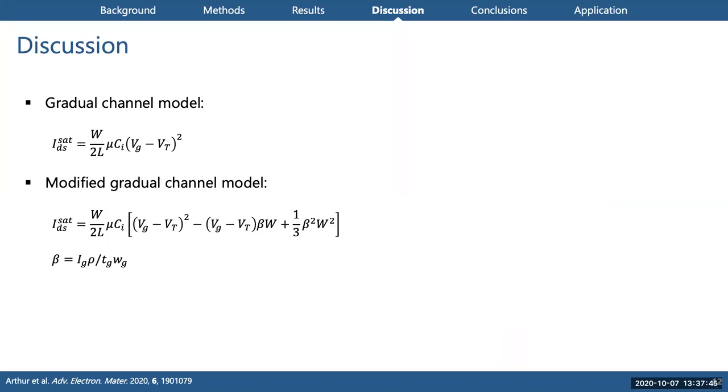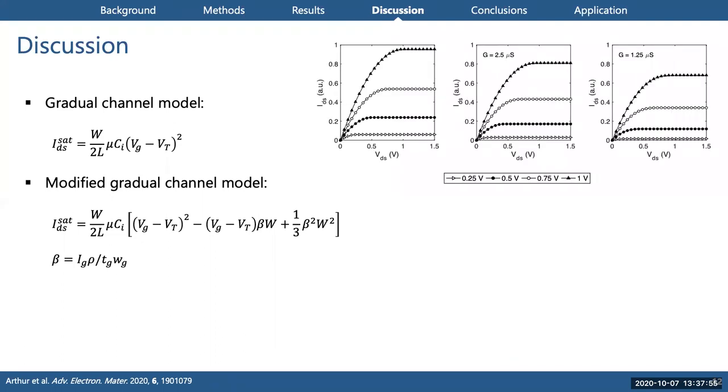These diagrams show the layout of our HIFETs. The gate voltage is applied to this ITO contact and must be transmitted along the length of the PEDOT:PSS gate to reach the channel area between the source and drain electrodes. We were thinking that the voltage may be diminishing as the current flows over this length of resistive material. So to test this idea, I modified the gradual channel model, which is standard for modeling field effect transistors, to account for the decreased effective gate voltage.